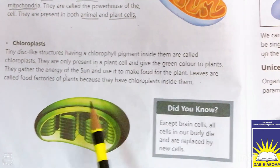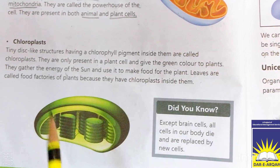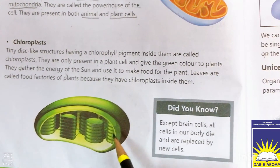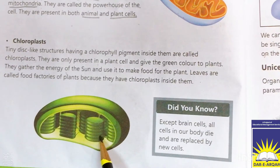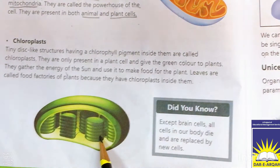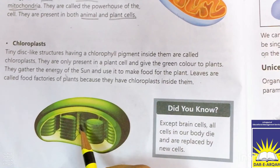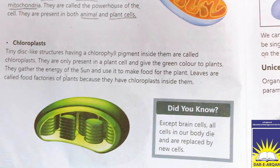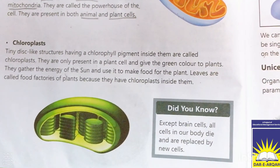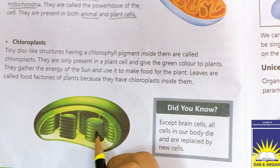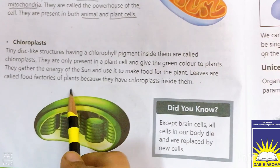Chloroplasts are only present in a plant cell — یہ صرف plant cell میں present ہوتے ہیں کیونکہ یہ plants کو green color دیتے ہیں۔ They gather the energy of the sun and use it to make food for the plant — یہ sun سے energy جمع کرتے ہیں اور plant کے لئے food بناتے ہیں۔